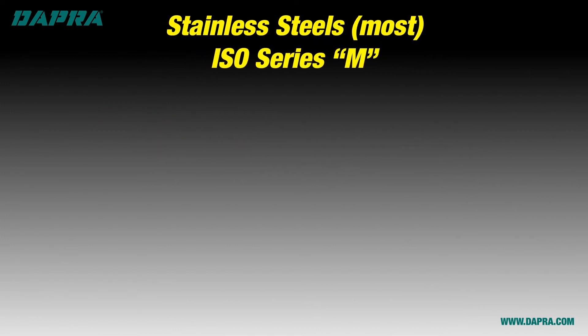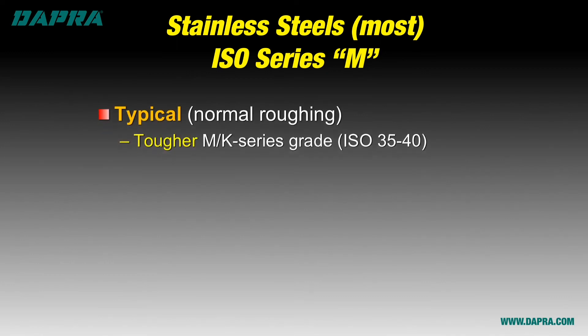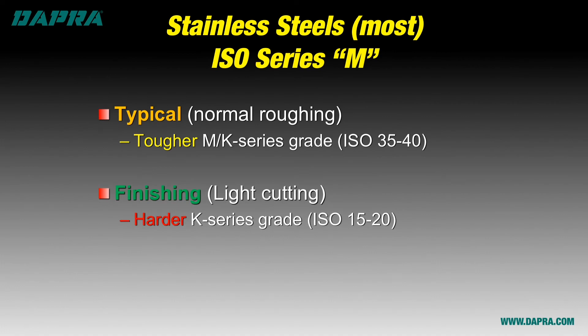ISO series M stainless steels are challenging in that they like to stick to your cutting edge and generate significant heat during the cut. Add to this the tendency to work harden and you've got a really fun material to machine. DAPRA recommends using tougher grades of carbide in the M or K range for most stainless steel roughing applications. For lighter, finishing style cuts, a harder grade of carbide in the K range can be successful, provided cutting edge chipping doesn't become a problem.